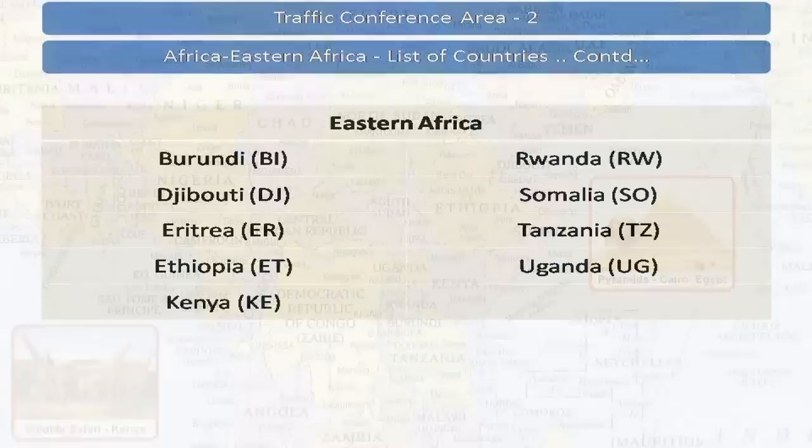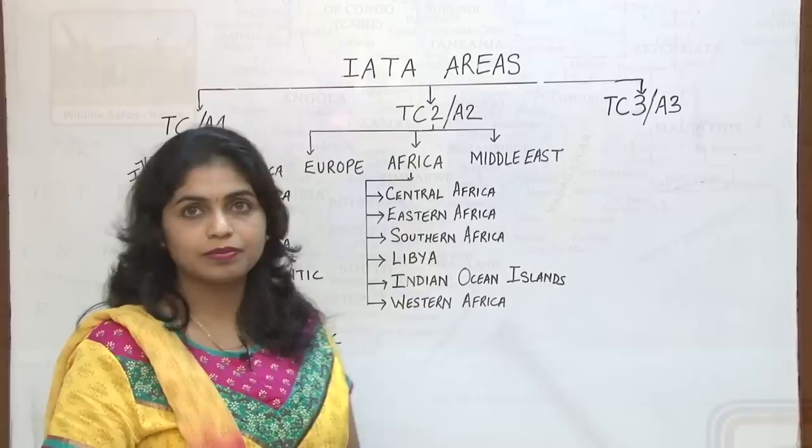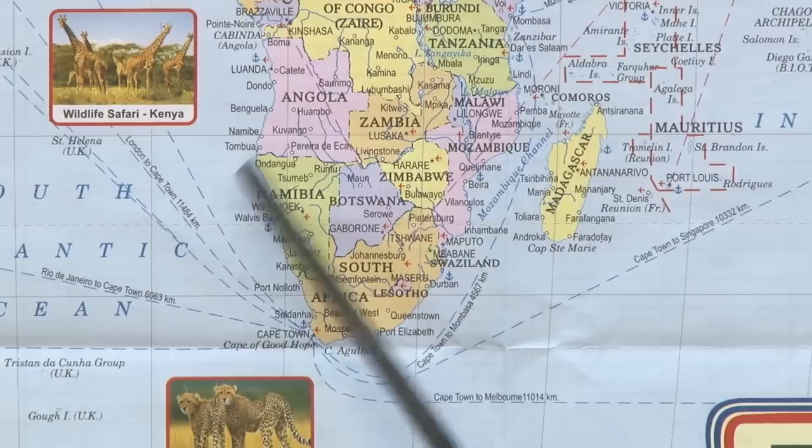Let us now concentrate on the list of countries included under Southern Africa. These are the countries coming under Southern Africa — as you can see, this will be on the southern tip of the African continent.